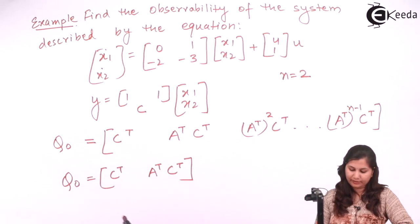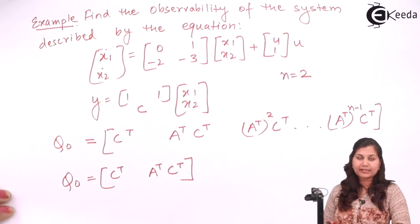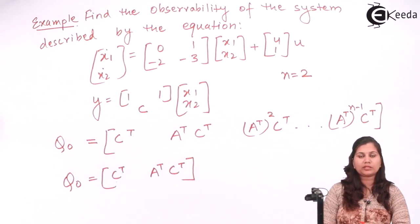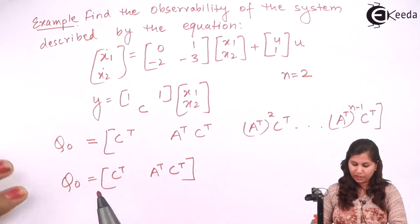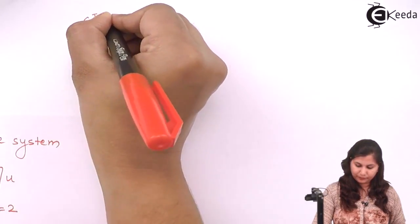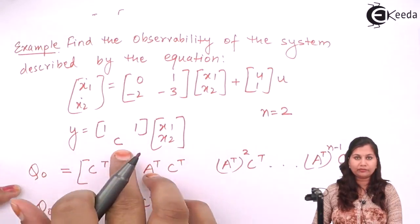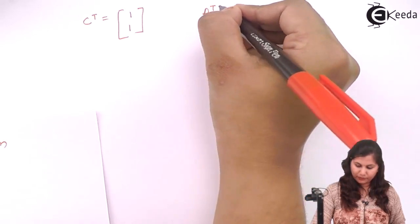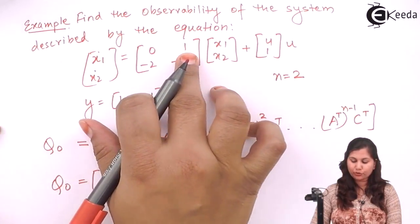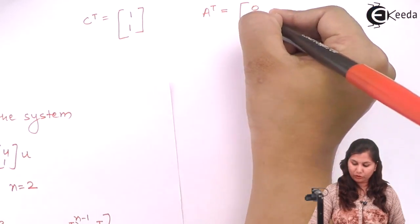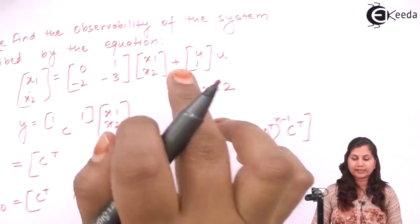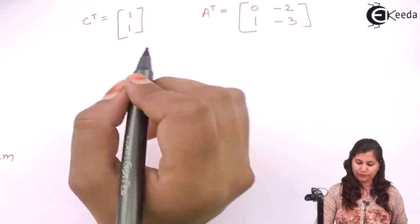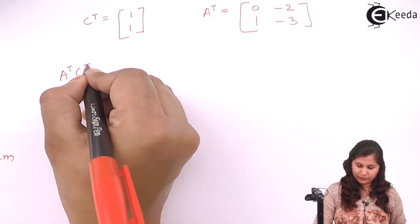We find the transpose of C: since C = [1, 1] as a row, Cᵀ becomes the column [1, 1]. For A transpose: the first row [0, 1] becomes the first column and the second row [-2, -3] becomes the second column. Then we calculate AᵀCᵀ by multiplying these two matrices.